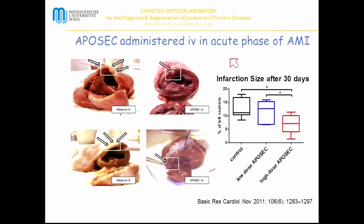Returning to the results of the first experimental setting — EPISEC administered intravenously in the acute phase of myocardial infarction — macroscopic pictures show a very thinned wall in the medium-treated (sham-treated) animals, and a partially preserved left ventricular wall in the EPISEC-treated animals. Even if not a normal structure, it is not as thin a scar as in the medium-treated animals. Infarction size decreased with higher-dose EPISEC compared with lower-dose EPISEC and with untreated control animals.